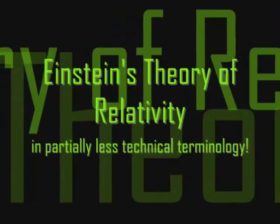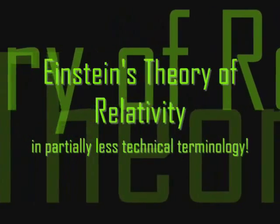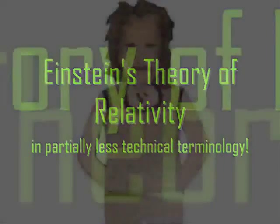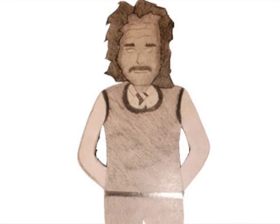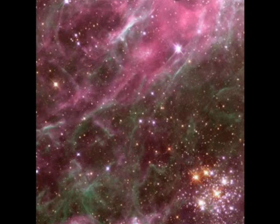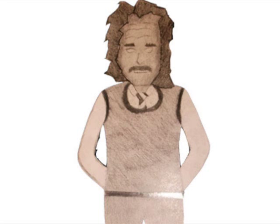Einstein's theory of relativity in partially less technical terminology. Many people think it was Einstein who came up with the theory of relativity, as if Albert was sitting in his office in Switzerland and, entirely on his own, came up with a way to describe space and time. It wasn't quite like that. However, we'll skip Albert's many predecessors and get to the interesting bits.